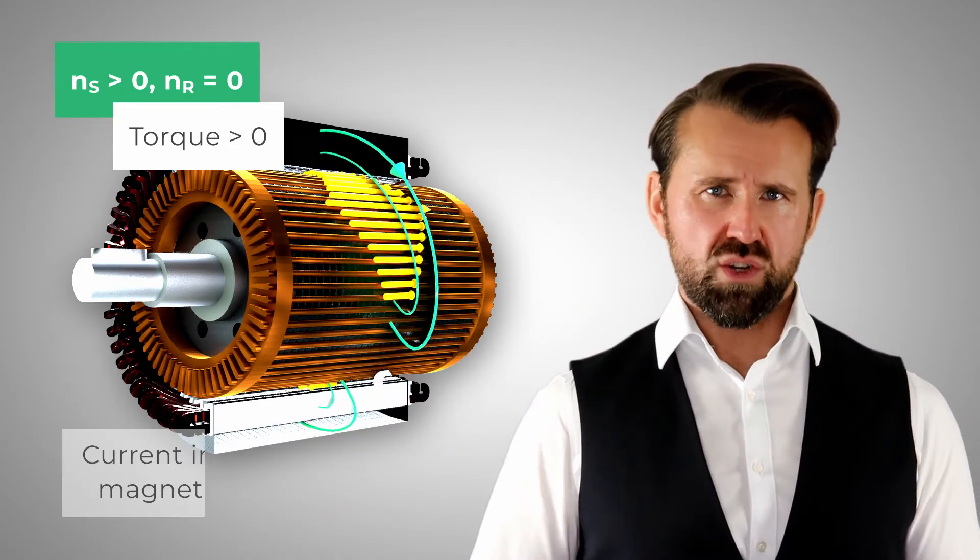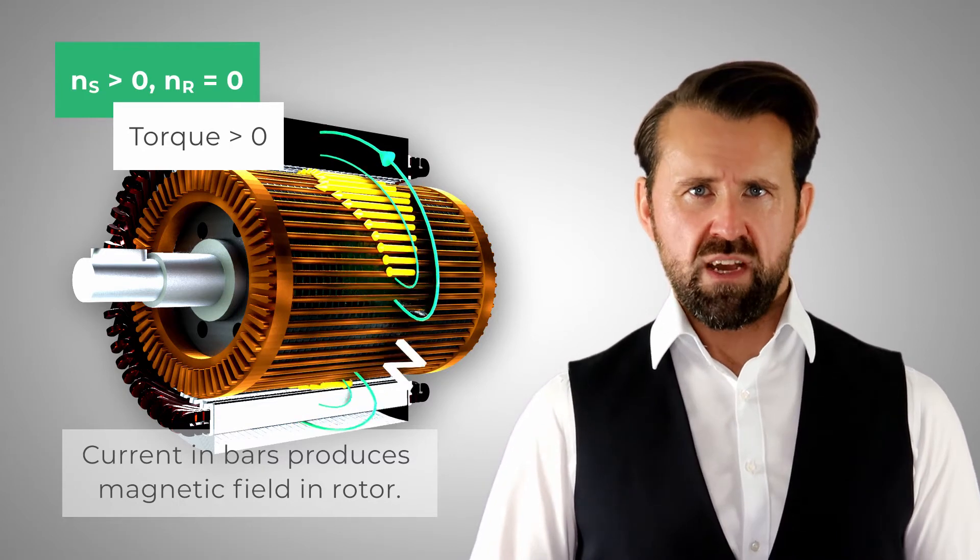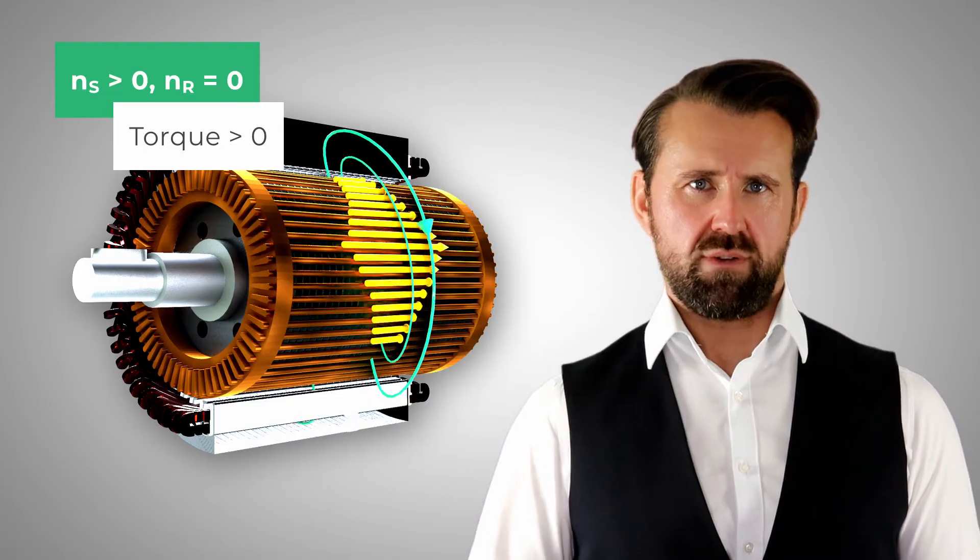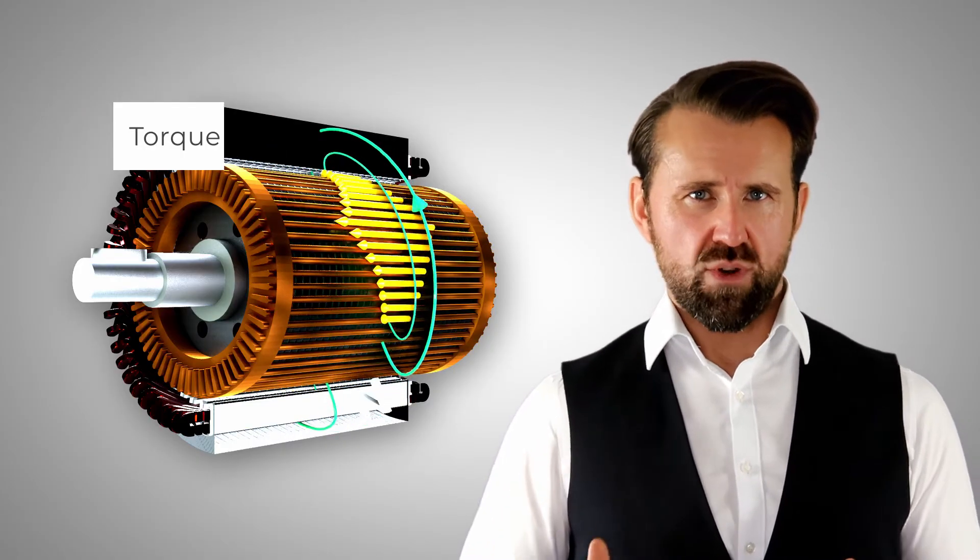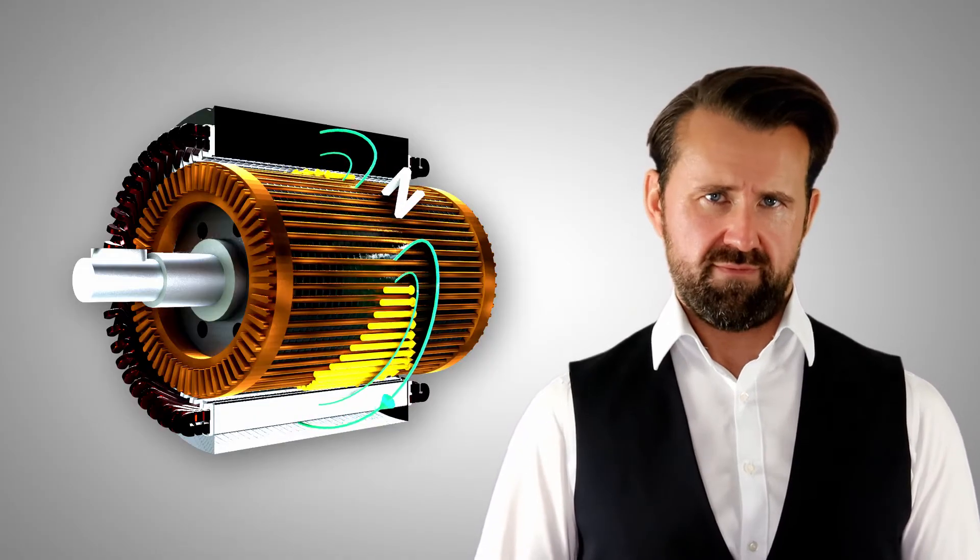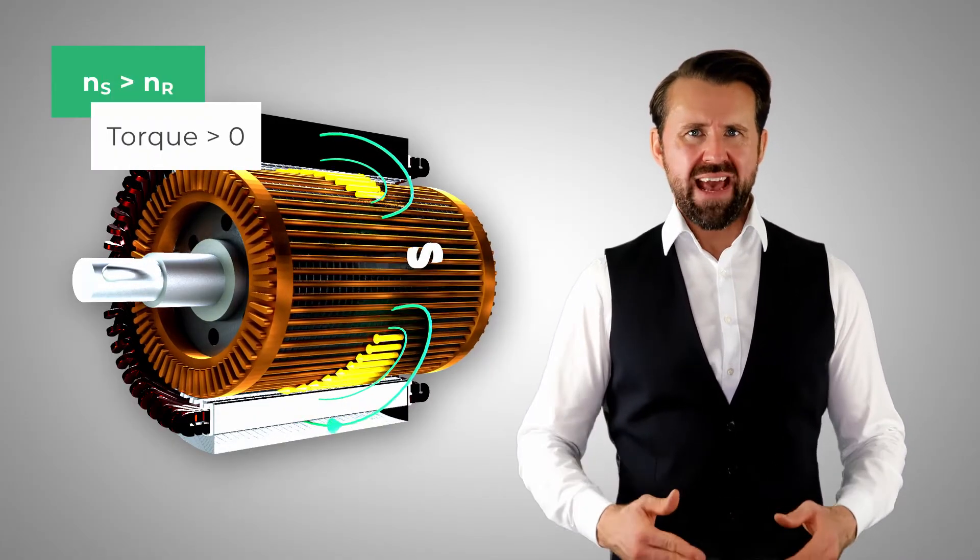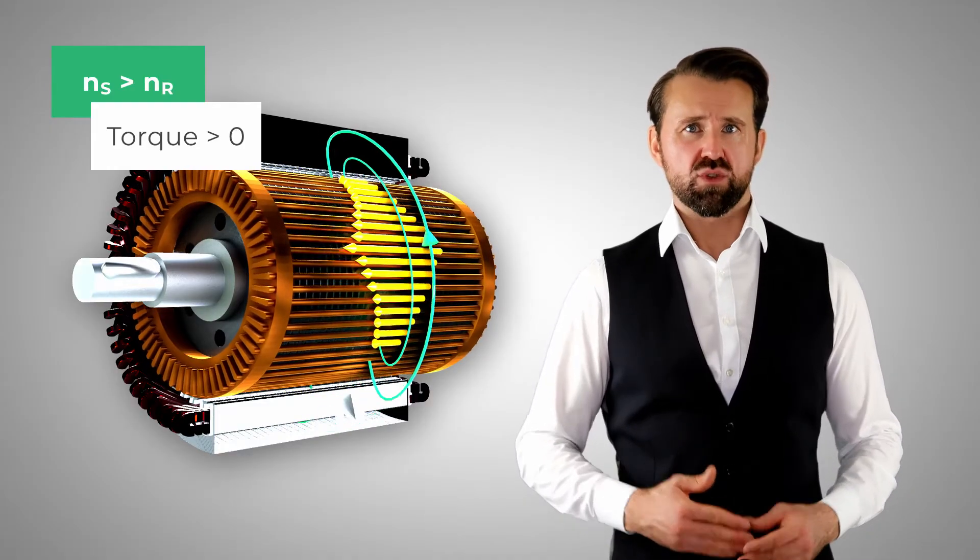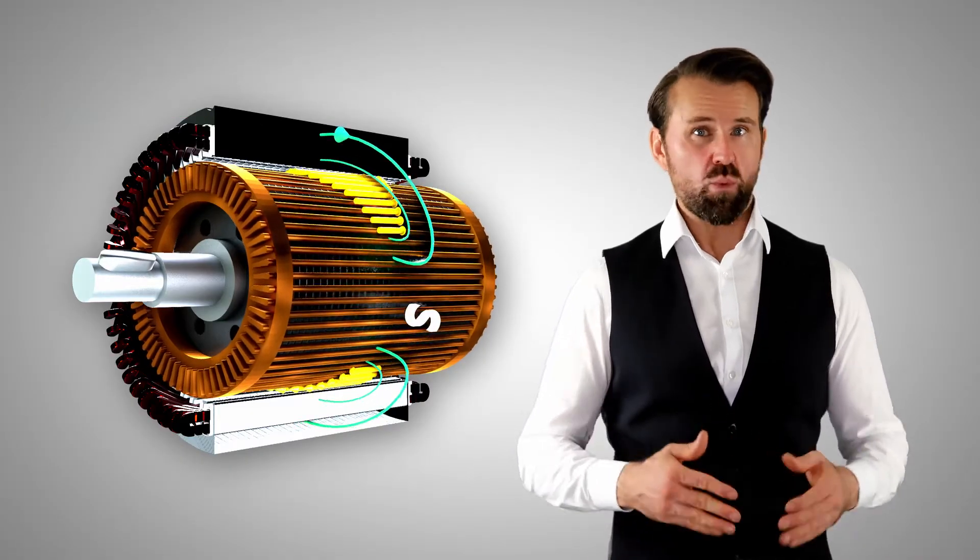The short-circuit current in the bars generates a magnetic field in the rotor which tries to follow the magnetic field of the stator. This produces a torque in the direction of the magnetic rotating field of the stator. If the rotor is now let go, the torque accelerates the mass of the rotor, so the rotor tries to reach the speed of the stator. But it can never do so. But why?